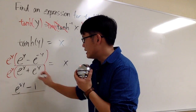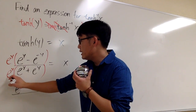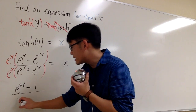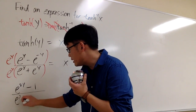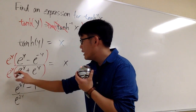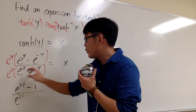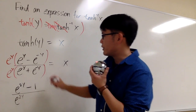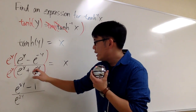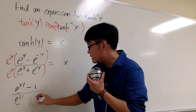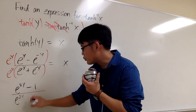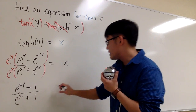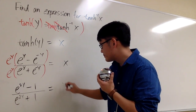For the denominator, e to the y times e to the y gives e to the 2y, and e to the y times e to the negative y gives plus 1. So the denominator is e to the 2y plus 1, and that's all equal to x.